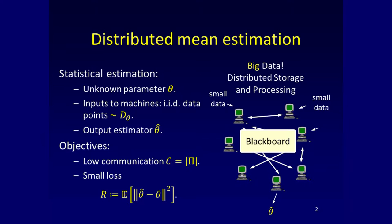The basic problem could have been called machine learning, but essentially it's a statistical problem. There is an unknown parameter theta, and we get IID points from distribution D_theta — most of the time it will be a Gaussian. The goal is to output an estimator based on the data, with objectives of low communication and minimizing loss.